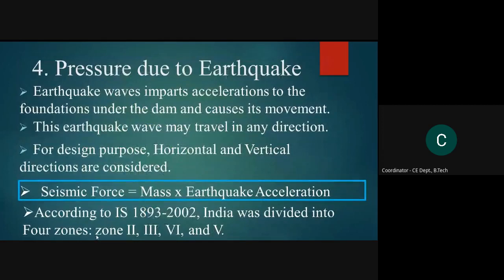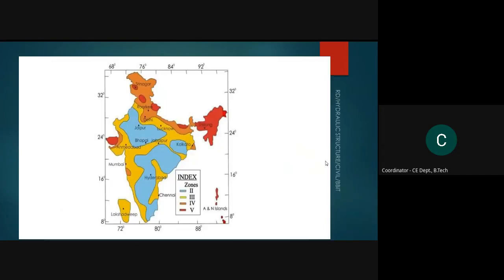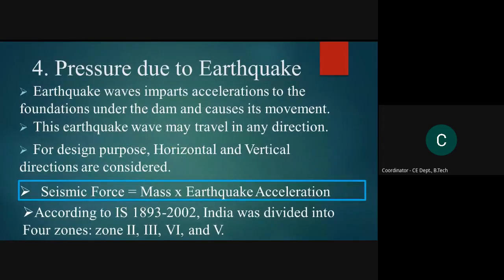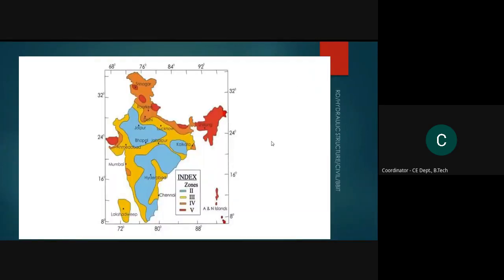These four zones represent the severity or occurrence of earthquakes in our country. Looking at the map, the darker the color — particularly the red-colored locations — the more severe the earthquake history. In the last hundred or fifty years, these are the places where earthquakes have given devastating examples.